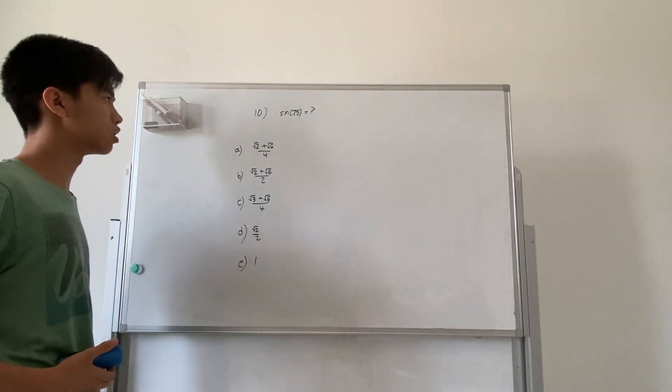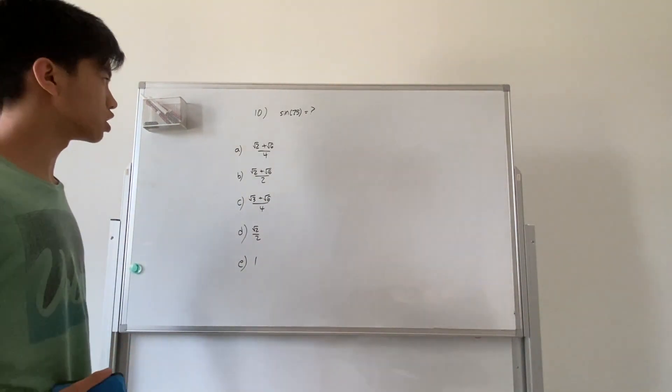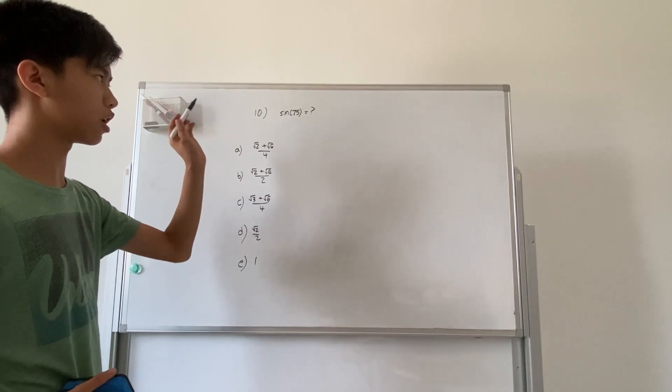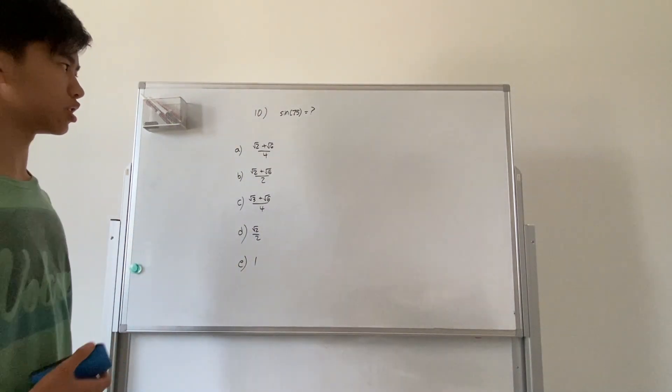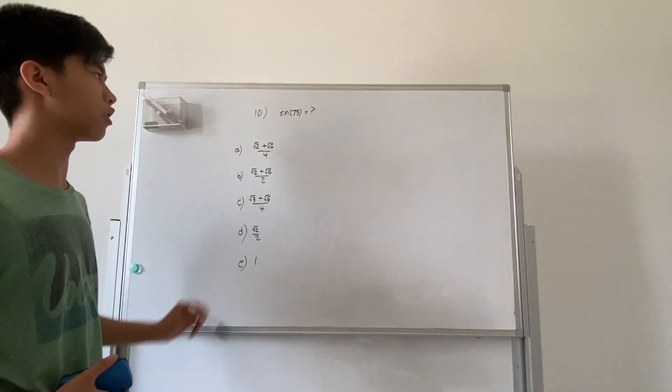On to problem 10. The question is asking what is sine of 75 equal to out of all these answers. Basically, express sine of 75 in terms of a radical.